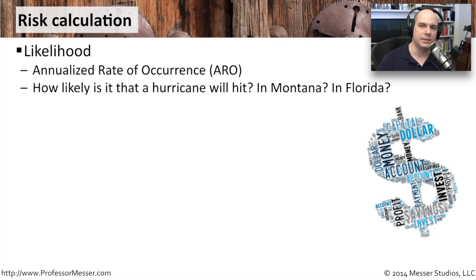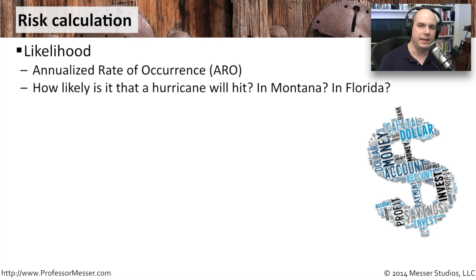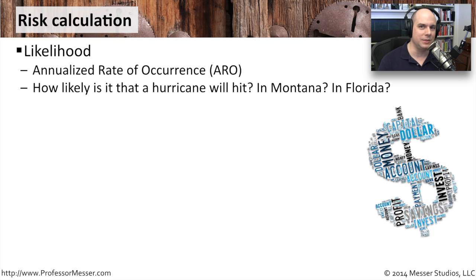So there needs to be a way to calculate risk, and a very simple way is to start with the likelihood of the risk. You should look at a particular risk and understand how often you expect it to occur, maybe in a year. We'll use an Annualized Rate of Occurrence, an ARO. If we're wondering how often a hurricane can hit our headquarters — if you're in Montana, your ARO is probably going to be very small. If you're in Florida, it's probably going to be a lot larger.